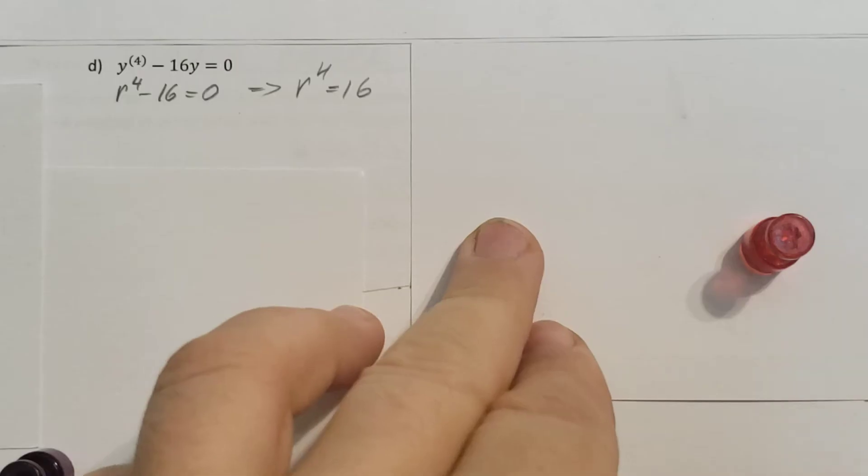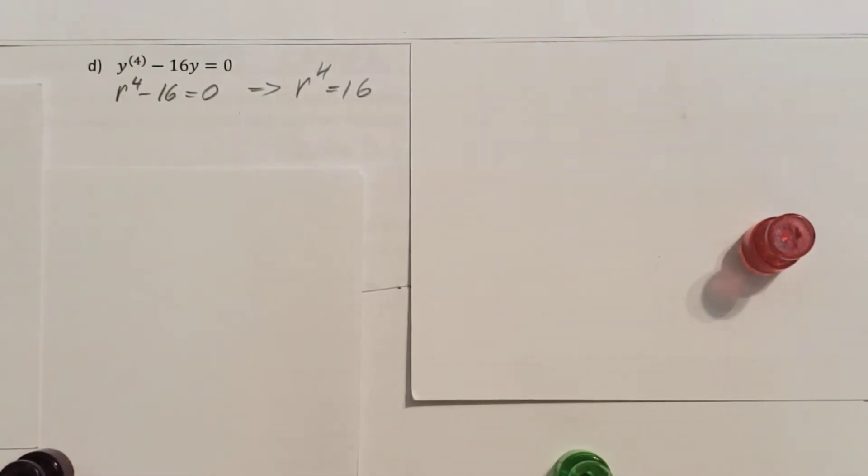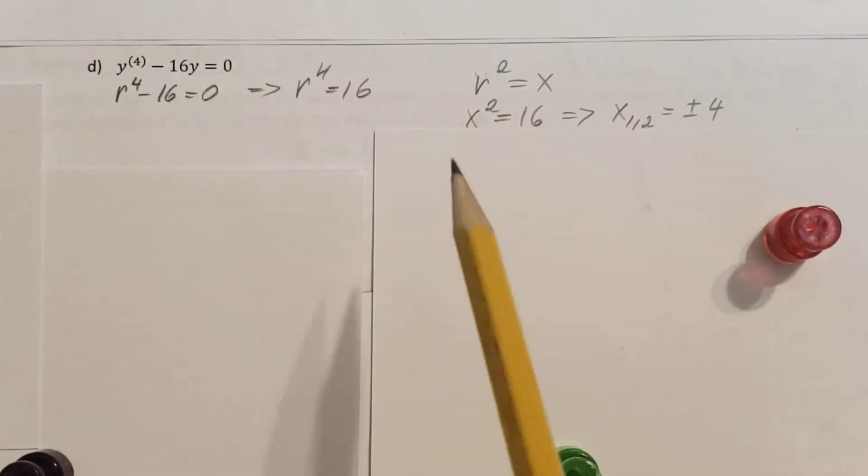Now, from here, r to the fourth equals 16. We're gonna have four roots, fourth power polynomial.